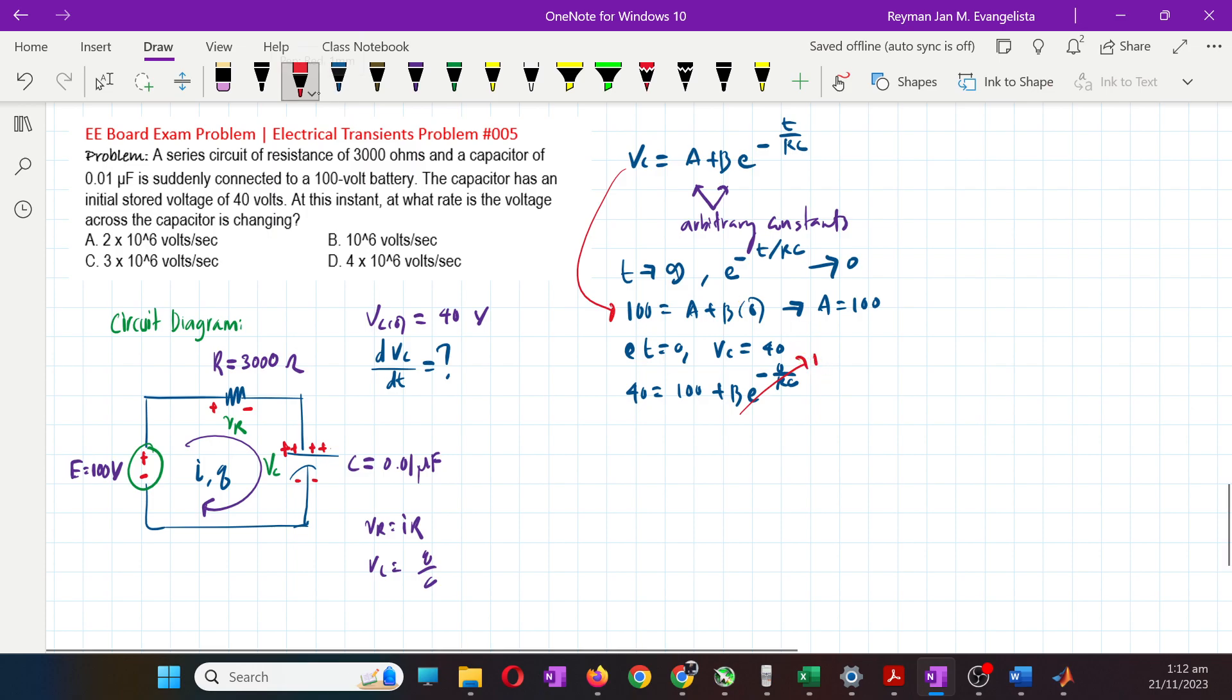So if that is 40, and A is 100, plus B, e raised to 0 is 1. This equals 100 plus B. So our B here is 40 minus 100, or negative 60.